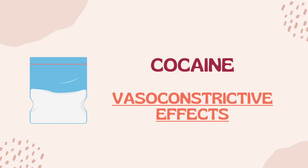Using cocaine during pregnancy can impede fetal development and lead to kidney dysplasia among other defects due to its vasoconstrictive effects. The developing fetus relies on a network of vessels to obtain the nutrients required for growth. Cocaine causes constriction of these vessels, in turn disrupting the network and disabling the fetus from obtaining the nutrients it requires to develop normally.